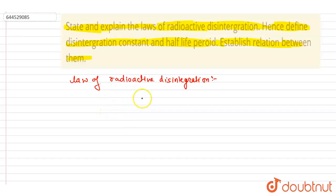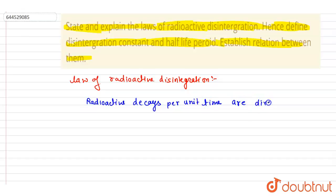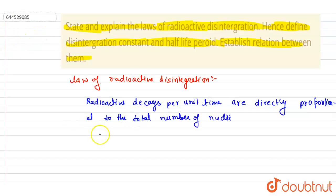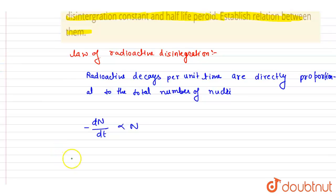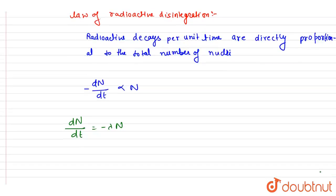So we can write: rate of disintegration is proportional to N, the number of nuclei present. The proportionality constant is the decay constant λ, and we put a negative sign because the number of nuclei is decreasing — it is disintegrating.